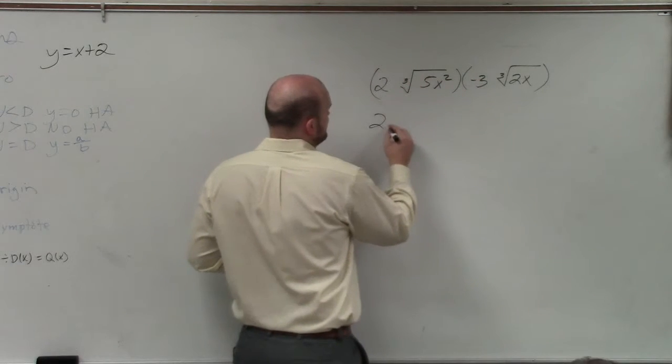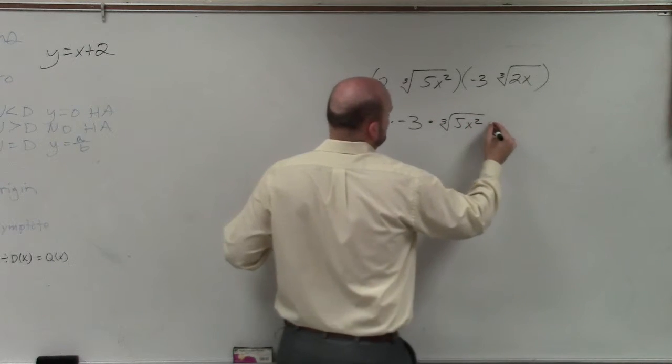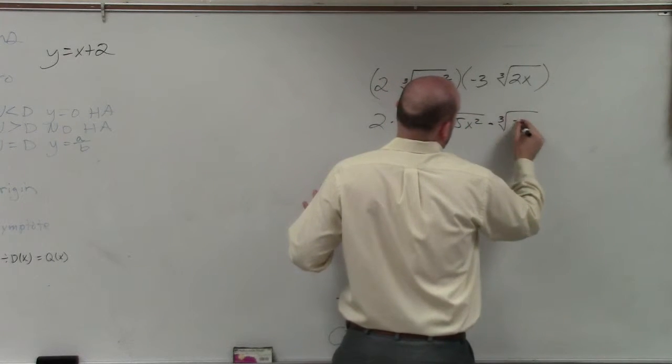So in reality, it's really 2 times negative 3, cube root of 5x squared times the cube root of 2x.